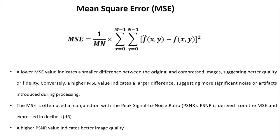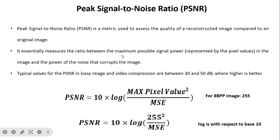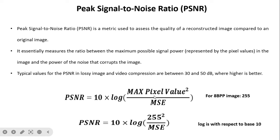MSE is generally used together with peak signal-to-noise ratio (PSNR). PSNR is derived from MSE and expressed in decibels — a higher PSNR value indicates better image quality. The formula is: PSNR = 10 × log₁₀(MAX² / MSE), where MAX is the maximum pixel value. For an 8-bit image, MAX is 255; for a 3-bit image, MAX is 7.